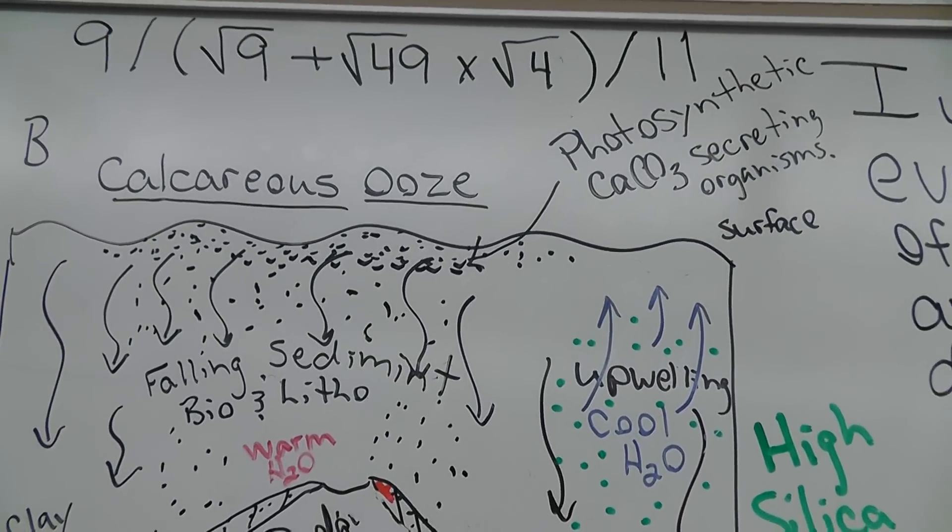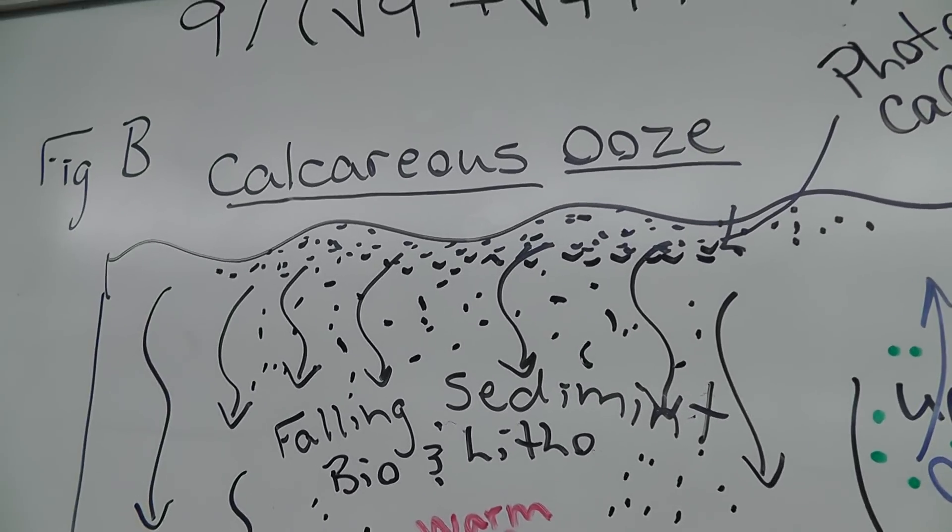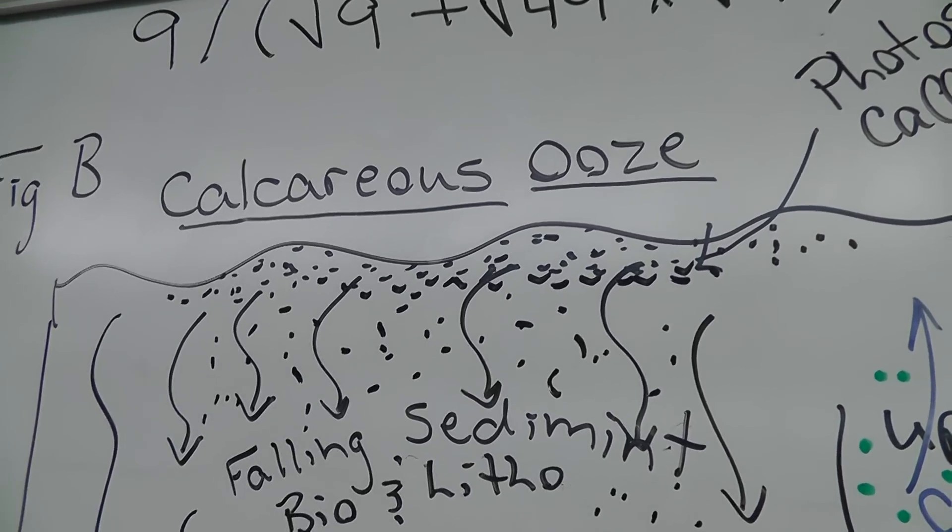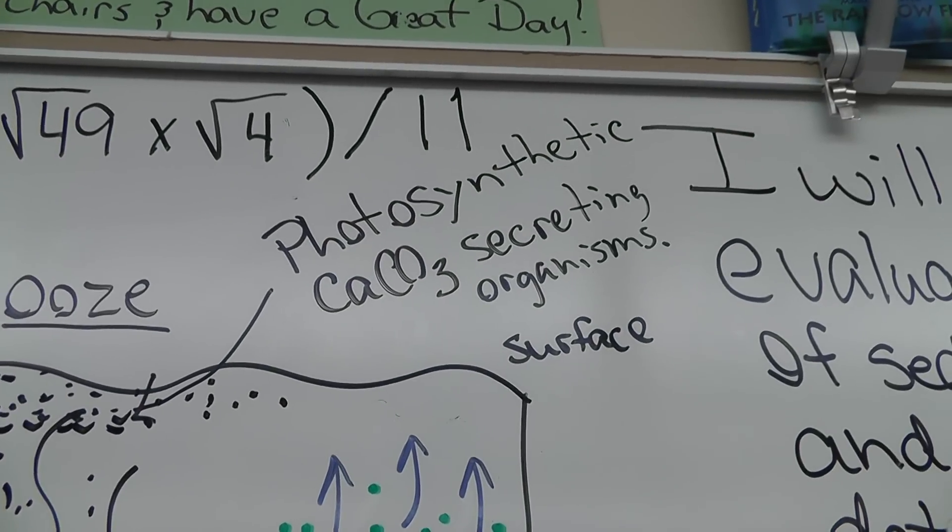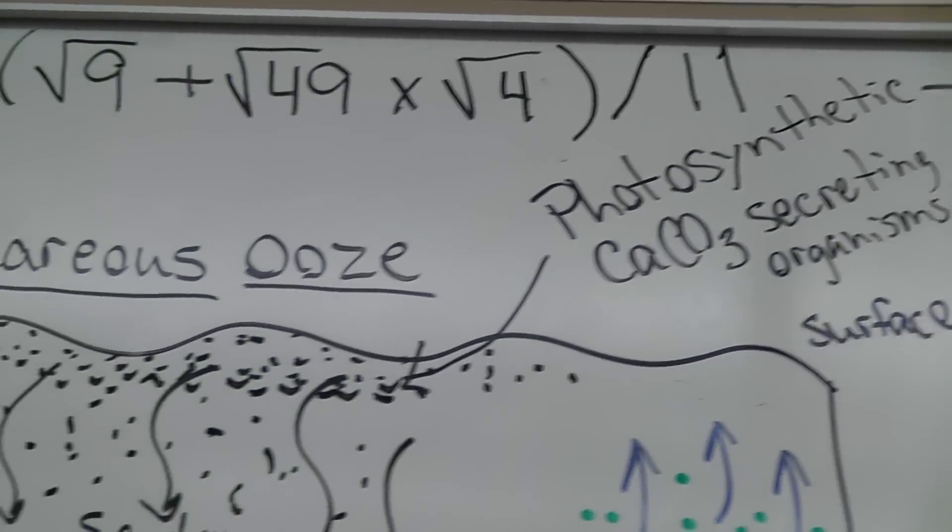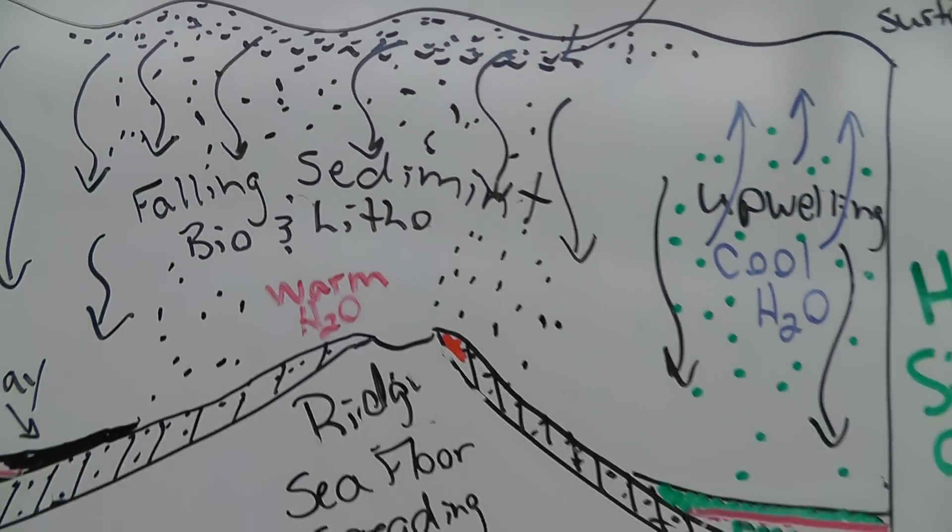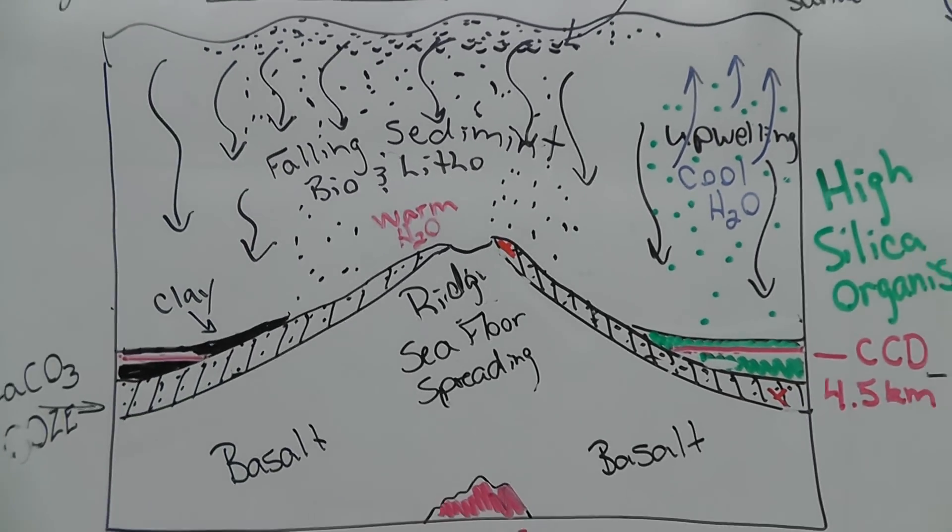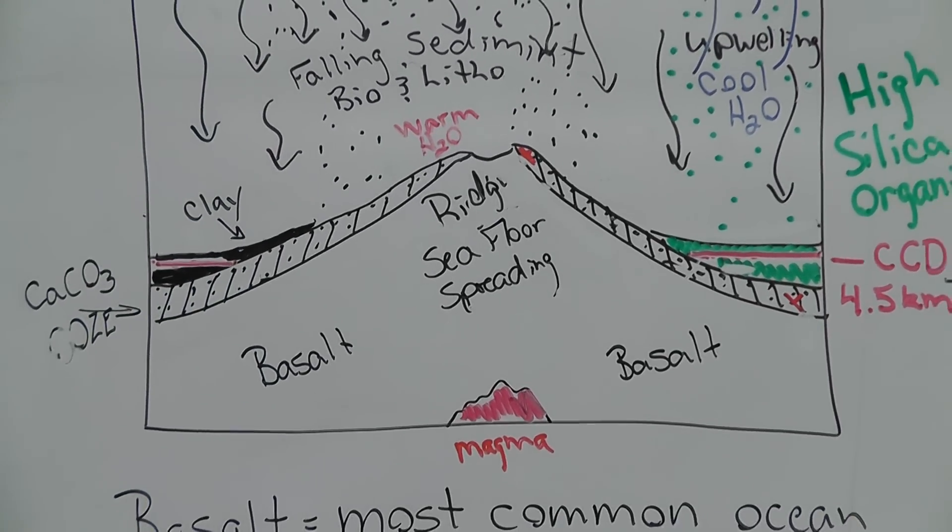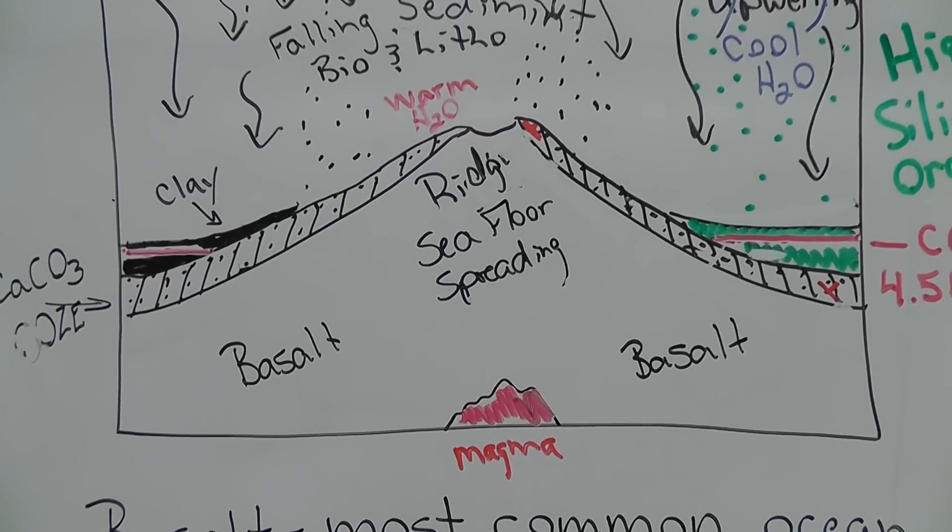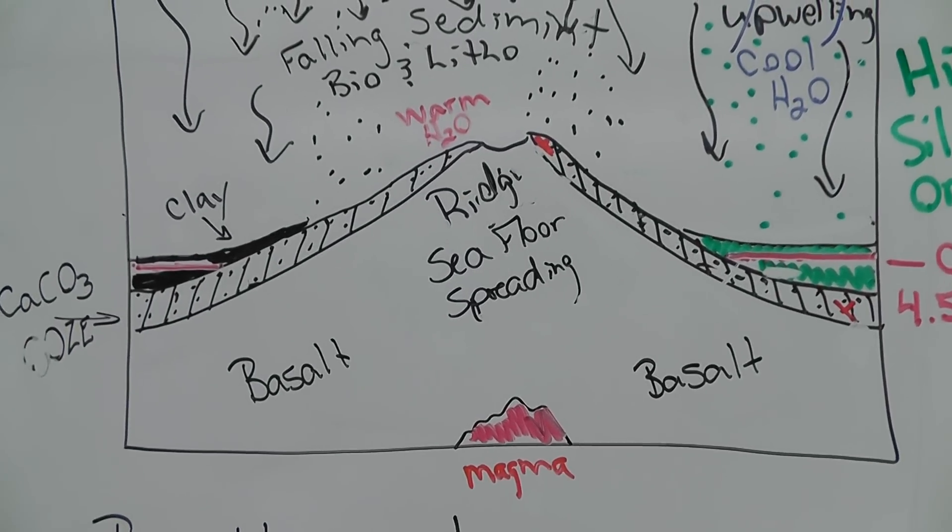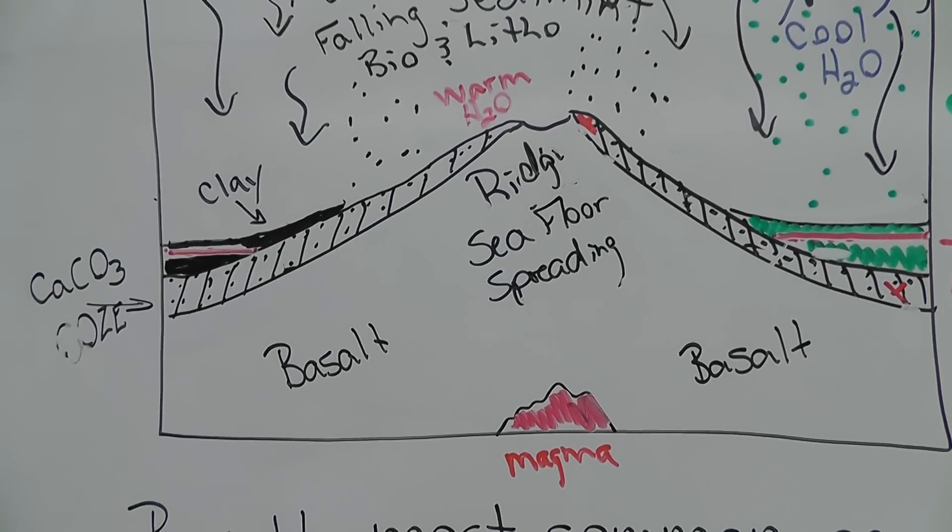Anyway again we have a bunch of calcite producing organisms at the surface because a lot of them are also photosynthetic so they need the sunlight. So let's take a look at this entire picture as a whole. So if we see we have this area which includes a ridge. Remember ridges are where magma comes up and produces new seafloor and it spreads apart.